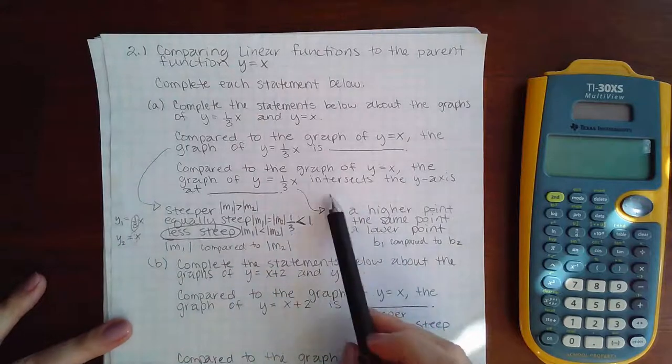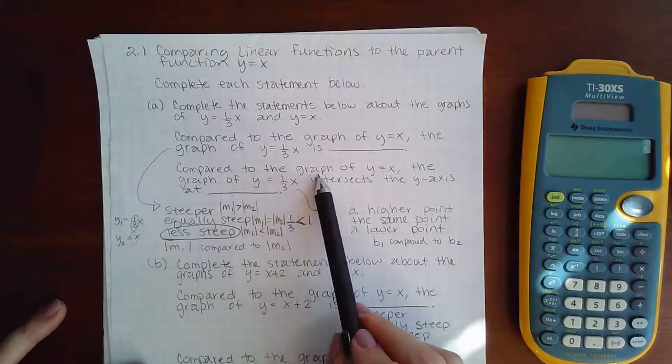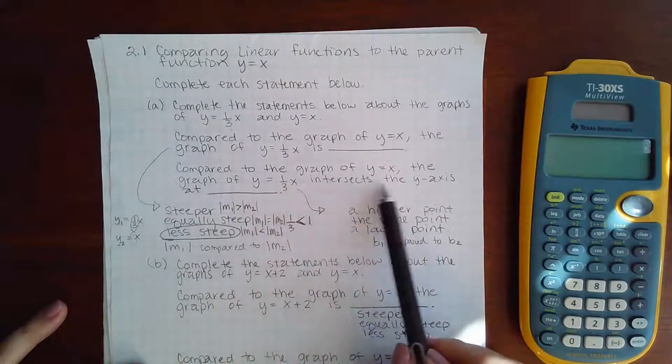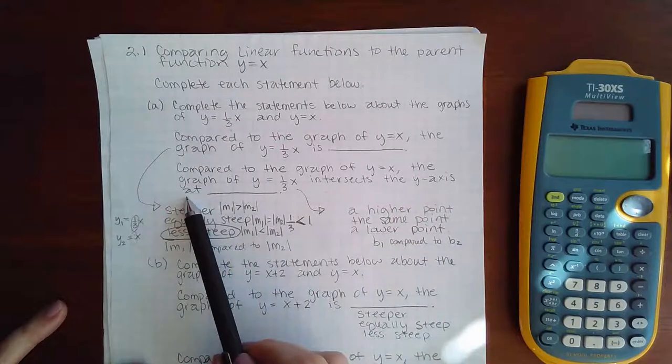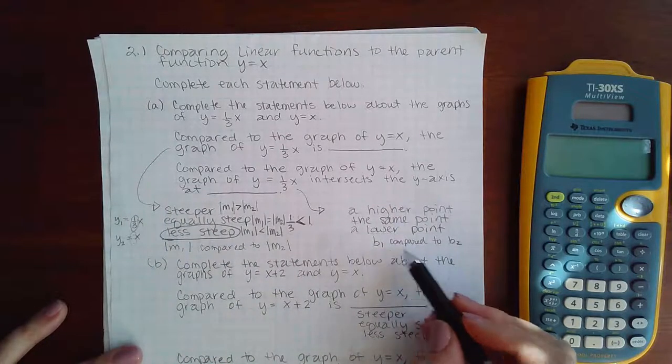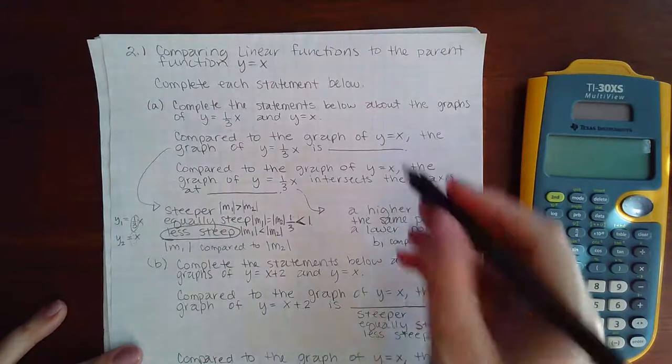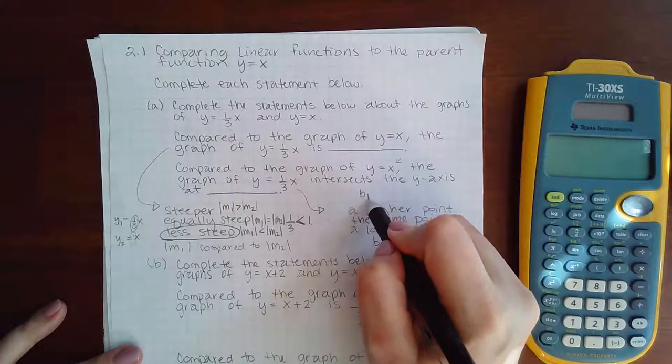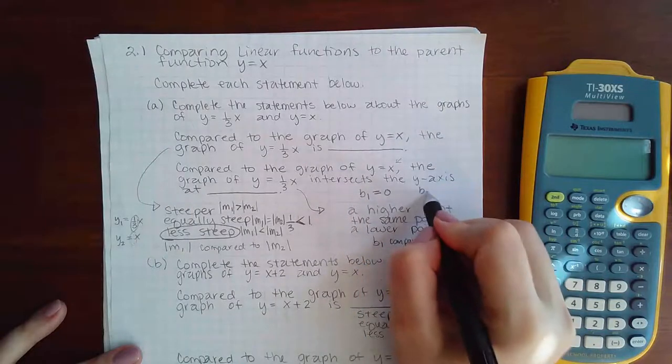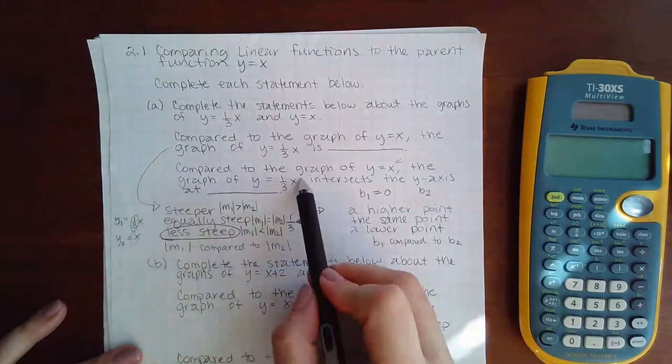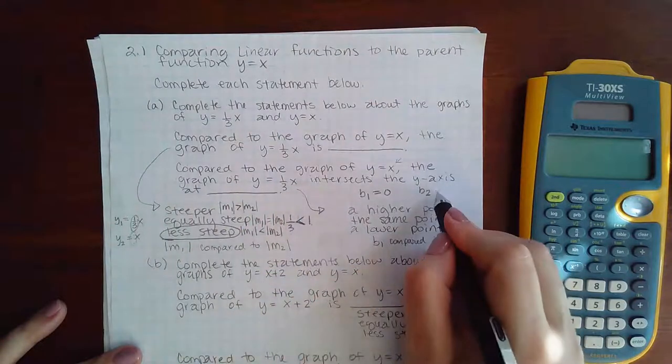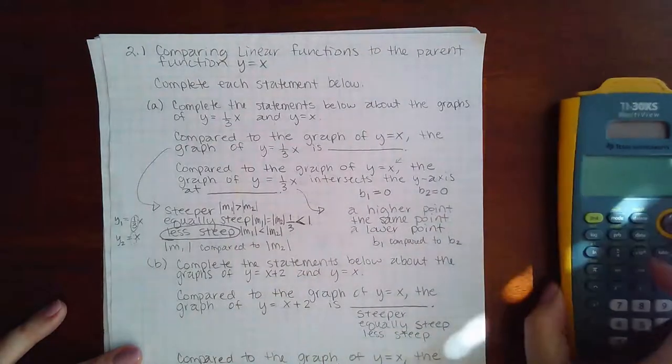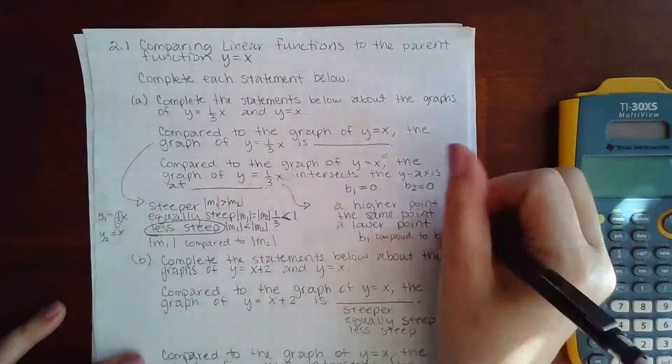Now over here it says compared to the graph of y equals x, the graph of y equals one-third x intersects the y-axis at... and now you're going to compare b1 to b2. So what is the y-intercept here? The y-intercept there is zero, so b1 equals zero, and then b2 also does not have a plus something, so the y-intercept for the second equation is also zero.